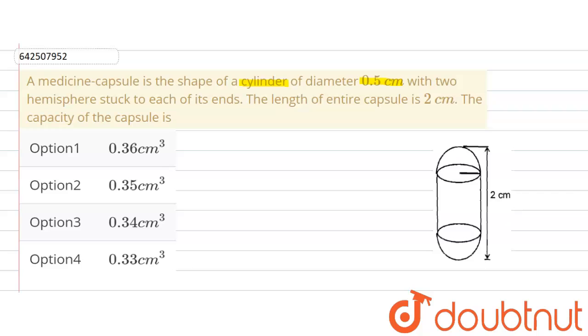Now if the diameter of the cylinder is 0.5 cm, so the radius of the cylinder will be 0.5 divided by 2. That means this will be equal to 0.25 cm.